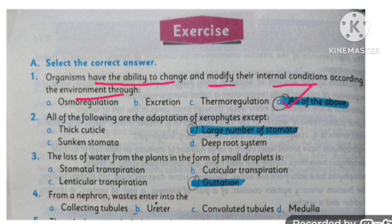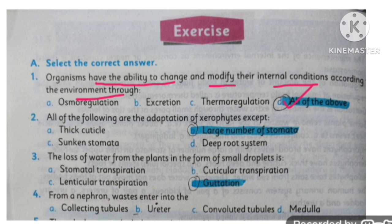So the correct option is all of these. MCQ number two: all of the following are adaptations of xerophytes except what? Xerophytes are the plants which are present in desert or xeric conditions. They have a less number of stomata in order to reduce water loss. So here the exception is large number of stomata.